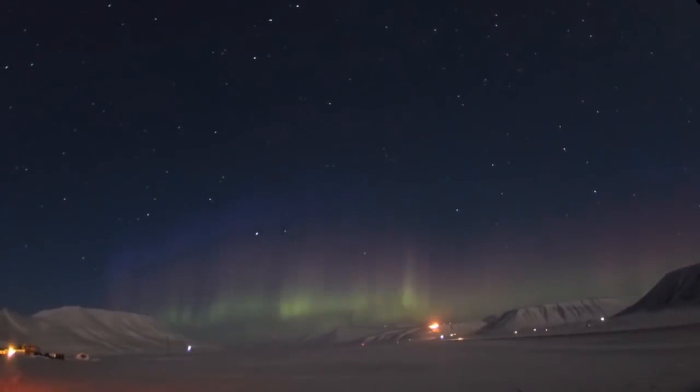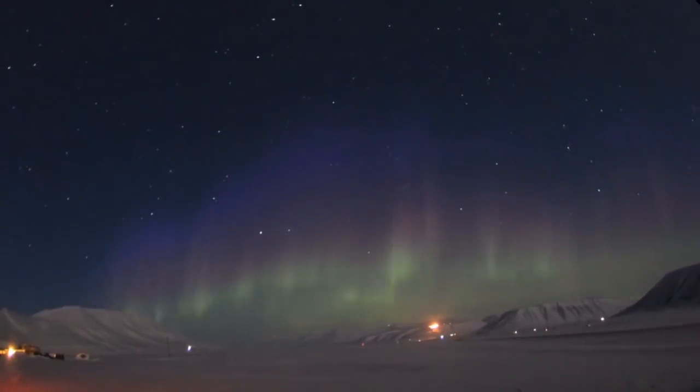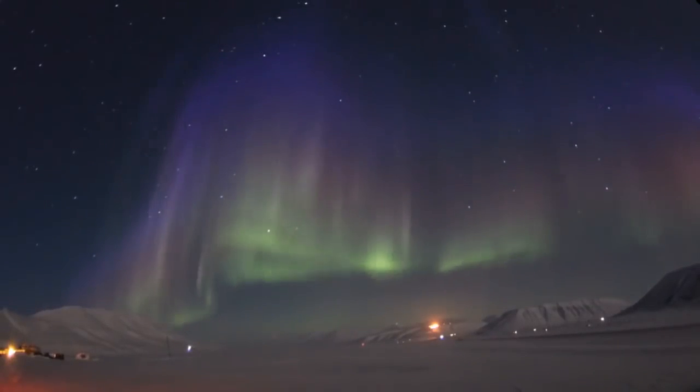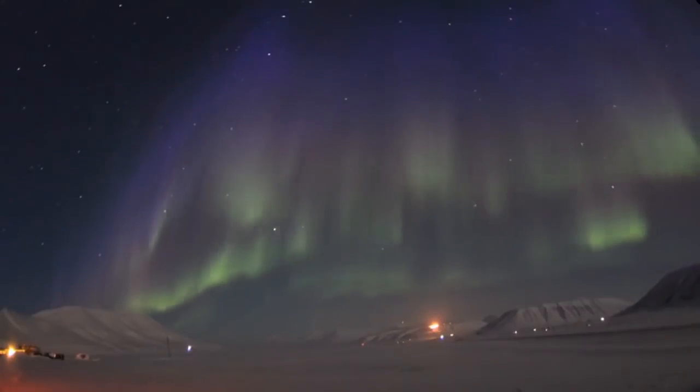These wispy auroras show us that our magnetic shield is still intact. When high-energy electrons strike nitrogen atoms, the atoms produce blue auroras at high altitudes, and sometimes magenta auroras at low altitudes.